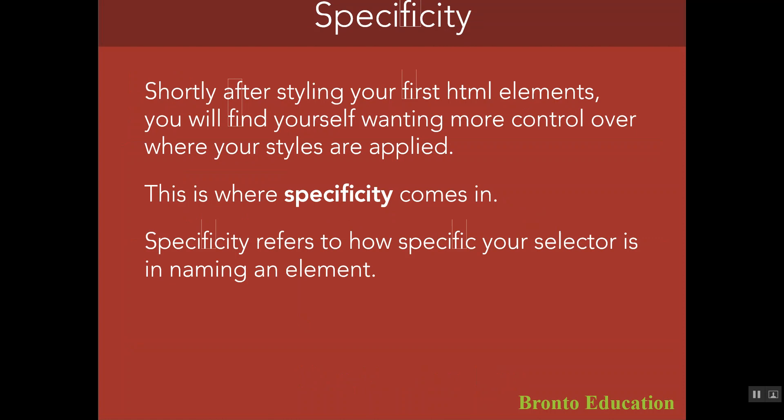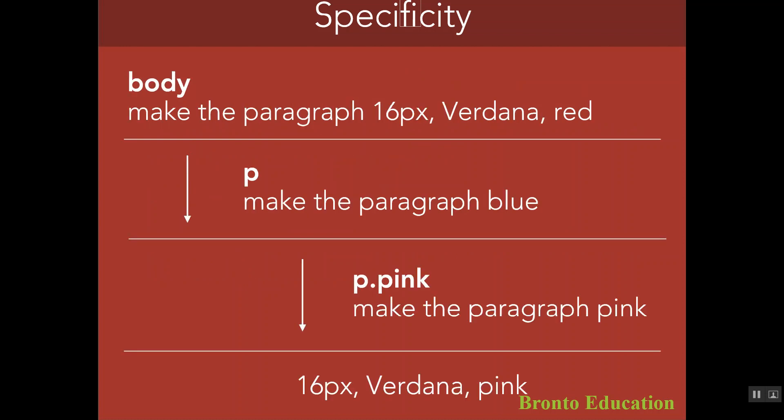Shortly after styling your first HTML elements, you will find yourself wanting more control over where your styles are applied — this is where specificity comes in. Sometimes you want to change one h1 to one color and another h1 to a different color. If you use h1 as the selector, all h1 elements get that color. But when you use an ID or a class, you can target a specific element — for example, p.pink makes that specific paragraph pink.